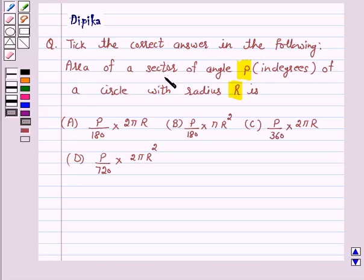Area of a sector of angle P in degrees of a circle with radius R is: